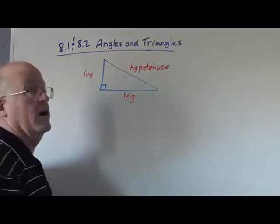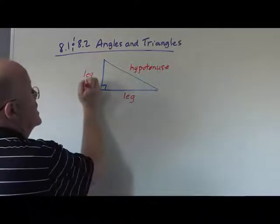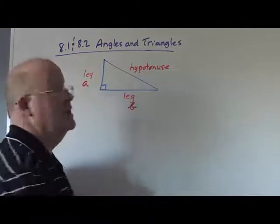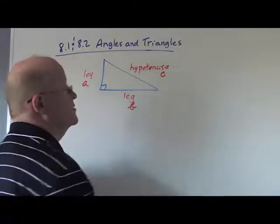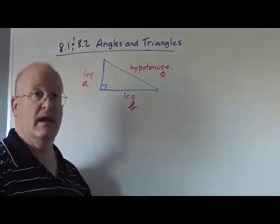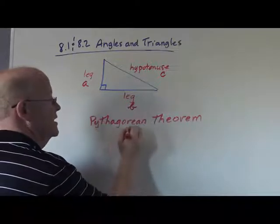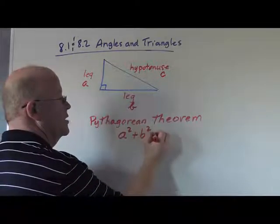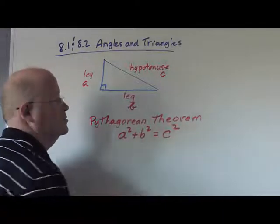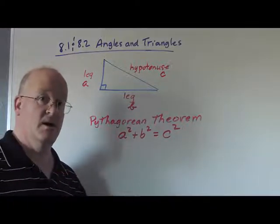Now quite frequently we use the letters A and B to represent the legs. And we use C to represent the hypotenuse. And the Pythagorean theorem tells us that A squared plus B squared will equal C squared for any right triangle.